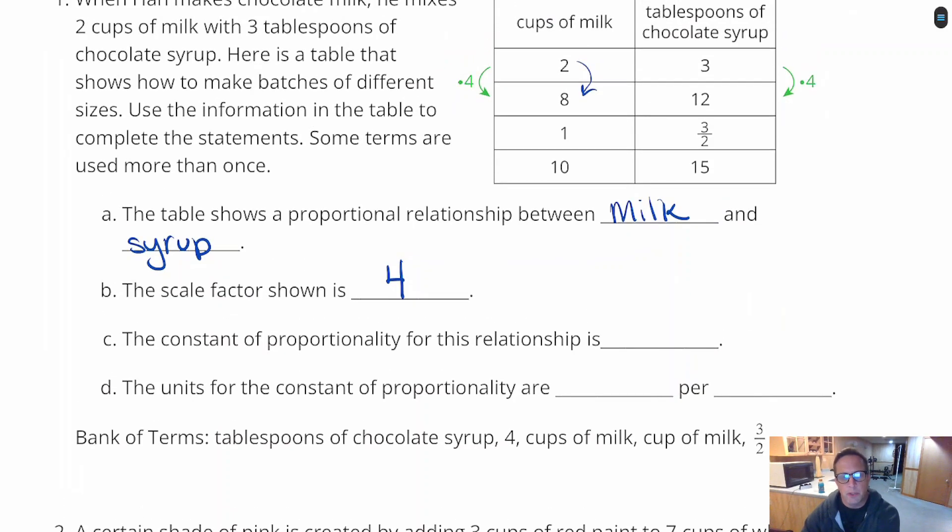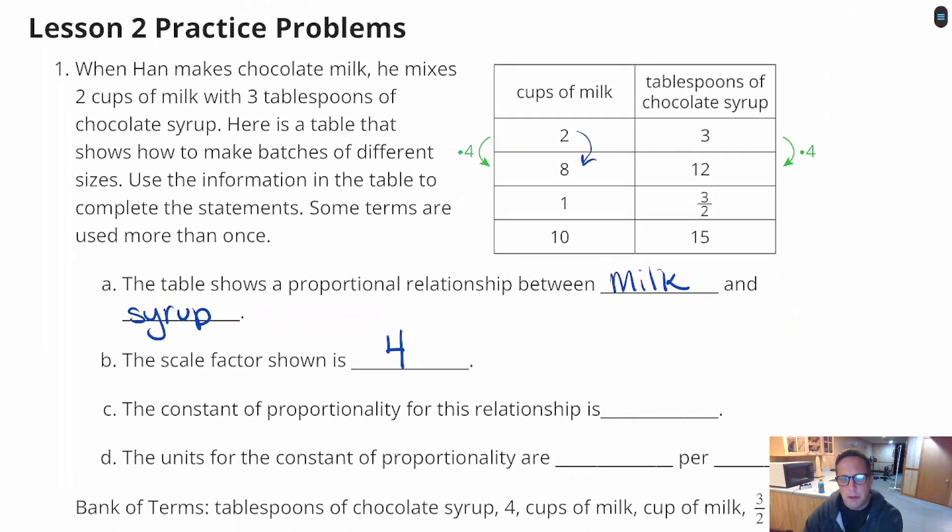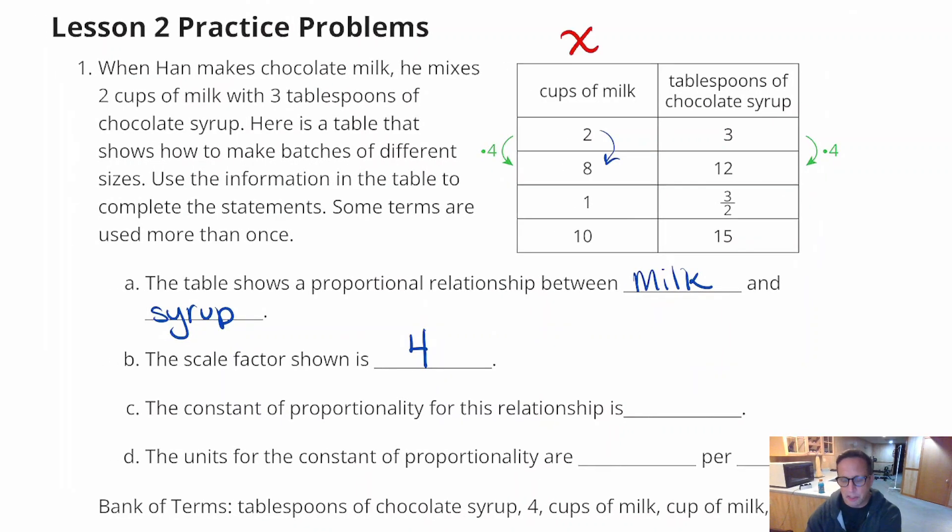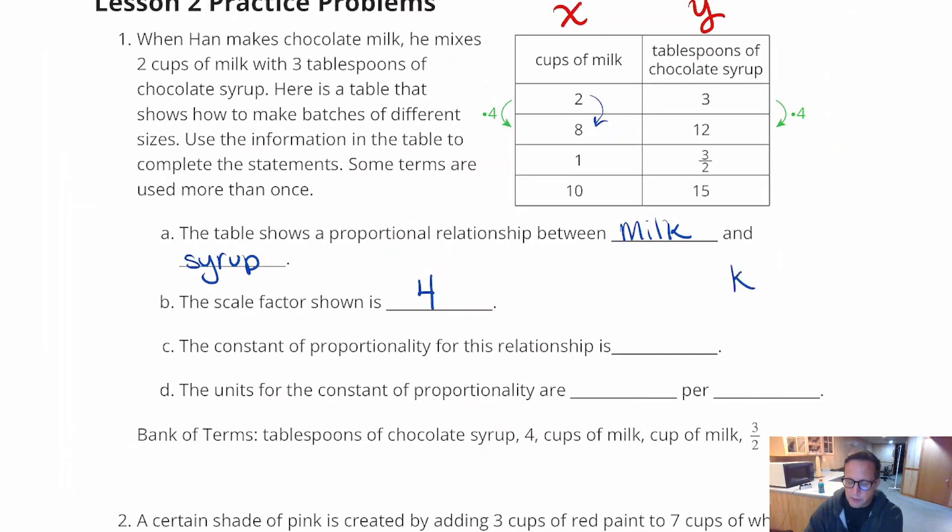The constant of proportionality for the relationship is... Now, I know it doesn't say X or Y, but it doesn't hurt for us to start thinking in these terms. It's good to think of this column as like your X, your inputs, and this is your Y. When you figure out your constant of proportionality, K equals Y over X, or Y divided by X.